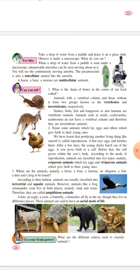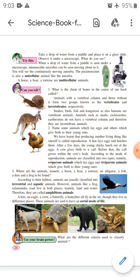You will see the continuously moving amoeba. Paramecium is also a unicellular animal like the amoeba. Horses, bears, and ourselves are multicellular animals. What is the chain of bones in the center of our back called? Yes, the chain of bones in the center of the body is called a vertebral column.